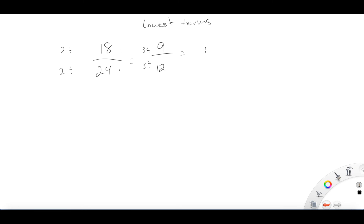So 9 divided by 3 is 3. 12 divided by 3 is 4. Now this is lowest terms. Pretty easy to see this. And I think we can do this pretty consistently and pretty well always.